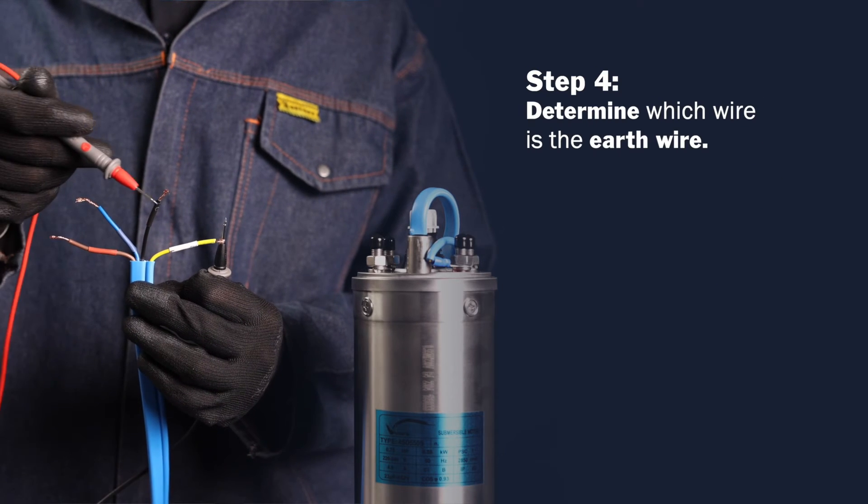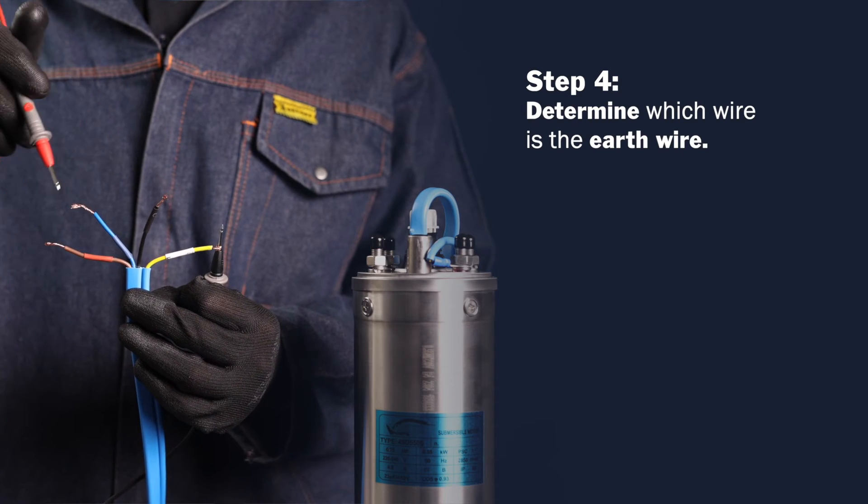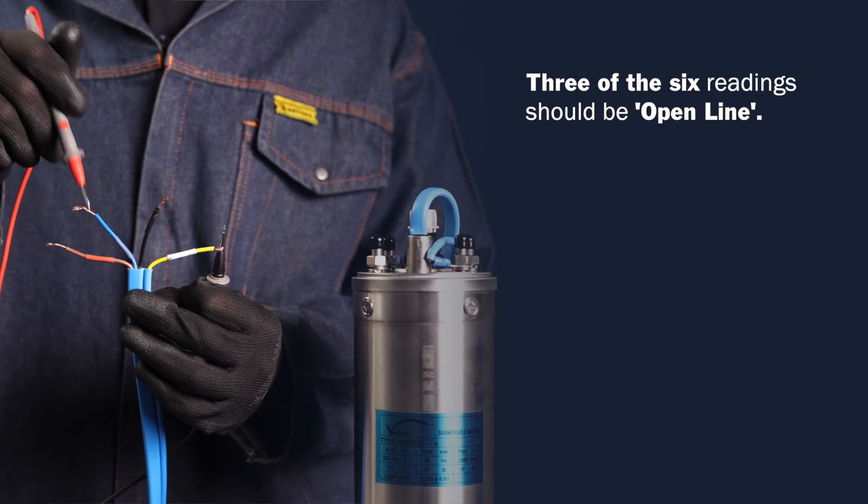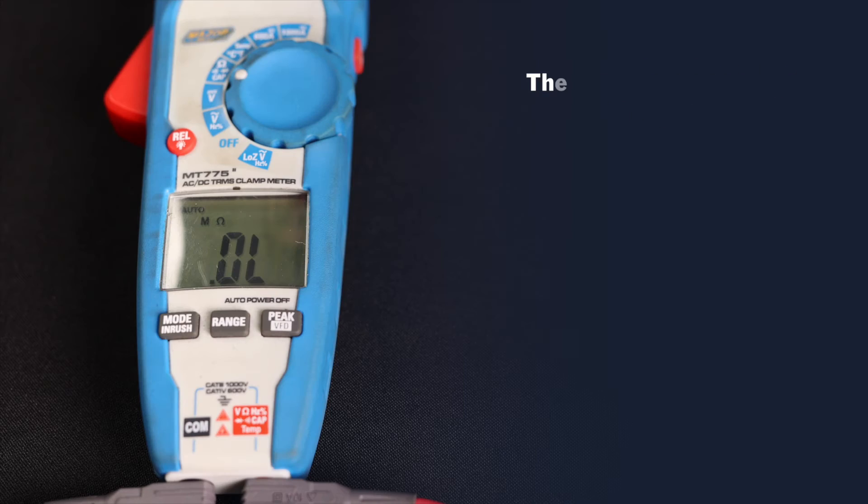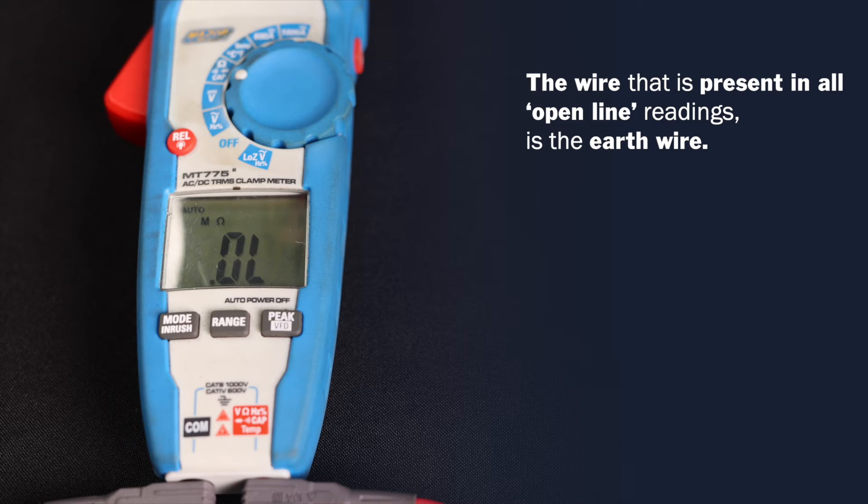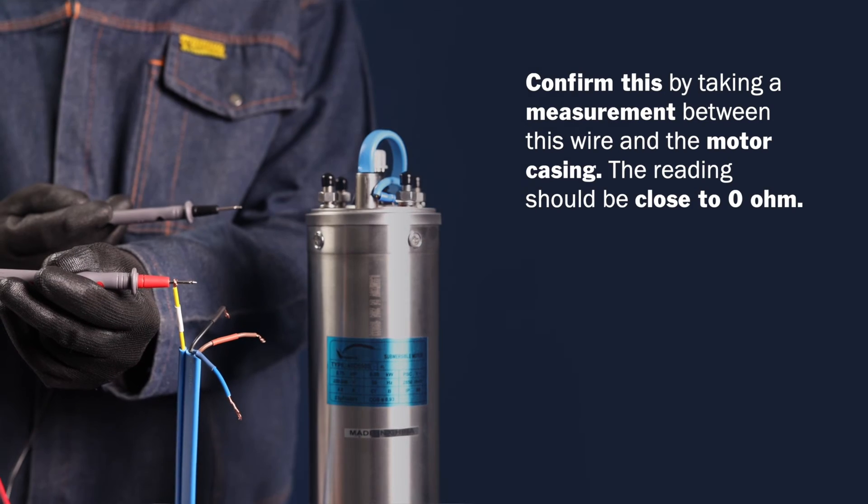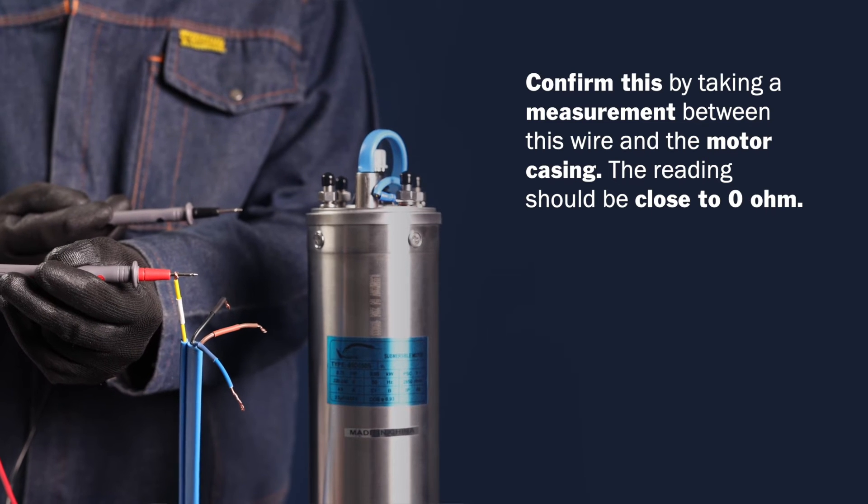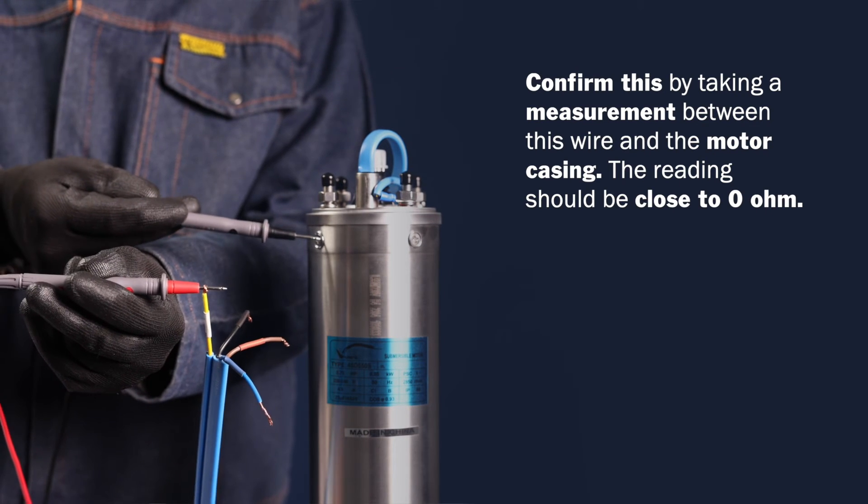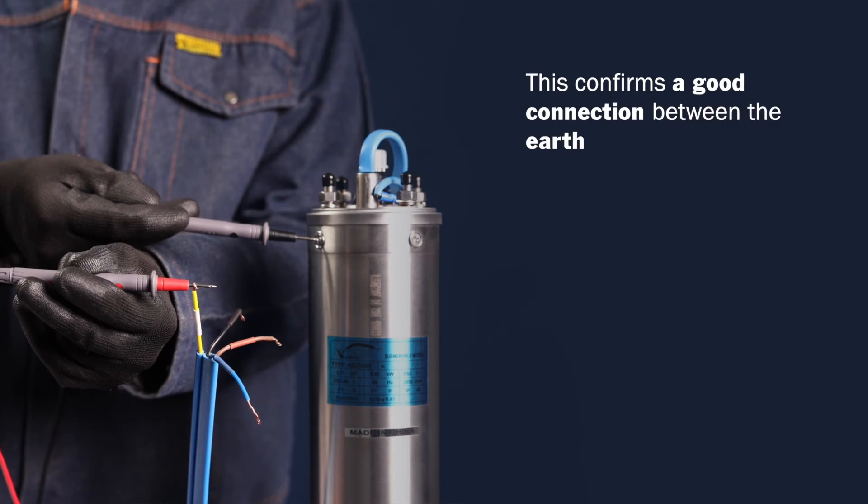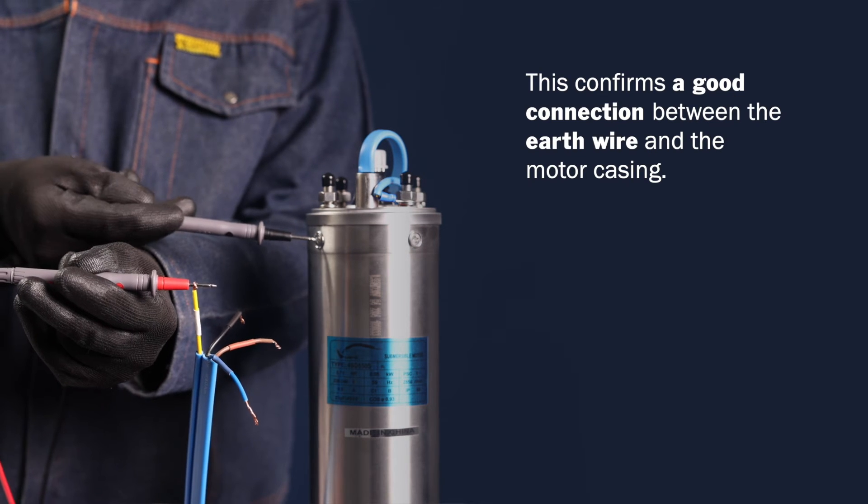Step 4. Determine which wire is the earth wire. There should be three of the six readings that are open line. The wire that is present in all open line readings is the earth wire. Confirm this by taking a measurement between this wire and the motor casing. The reading should be close to zero ohm. This confirms a good connection between the earth wire and the motor casing.